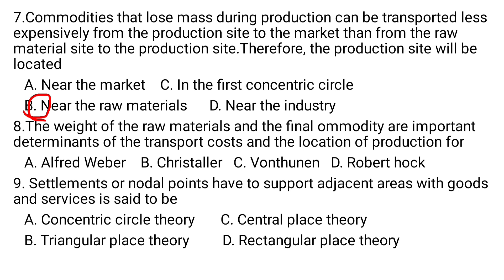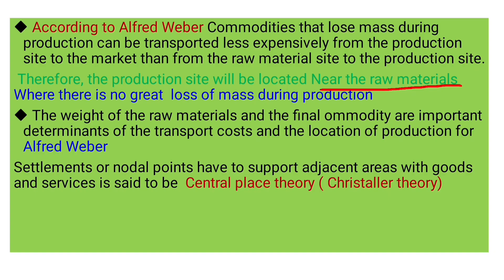Question number eight: The weight of raw materials and the final commodity are important determinants of transport costs and the location of productions for: A) Alfred Weber, B) Christaller, C) Von Thünen, D) Robert Hooke. The weight of raw materials and final commodities are important determinant factors of transport cost and location of production for Alfred Weber. The answer is A.